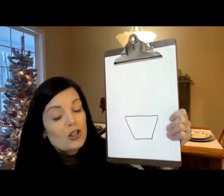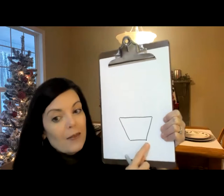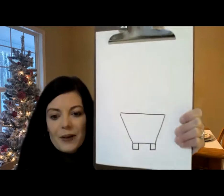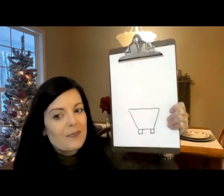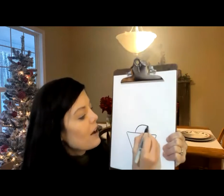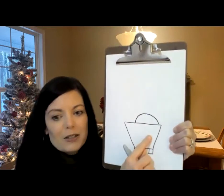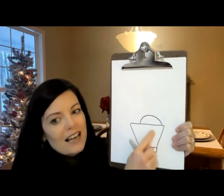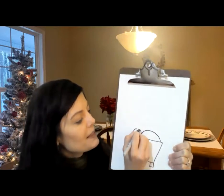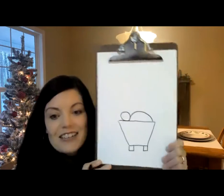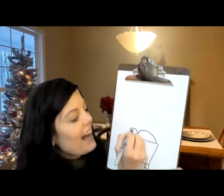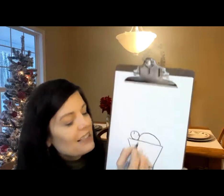Next we're going to draw two squares at the bottom of the trapezoid — one, two. Do you have your two squares? Next we're going to draw a half circle on the right side of the trapezoid. Then we're going to draw a circle right beside the half circle. Can you tell what this is going to be? Baby Jesus in a manger. Let's add a sleepy eye and a smile.